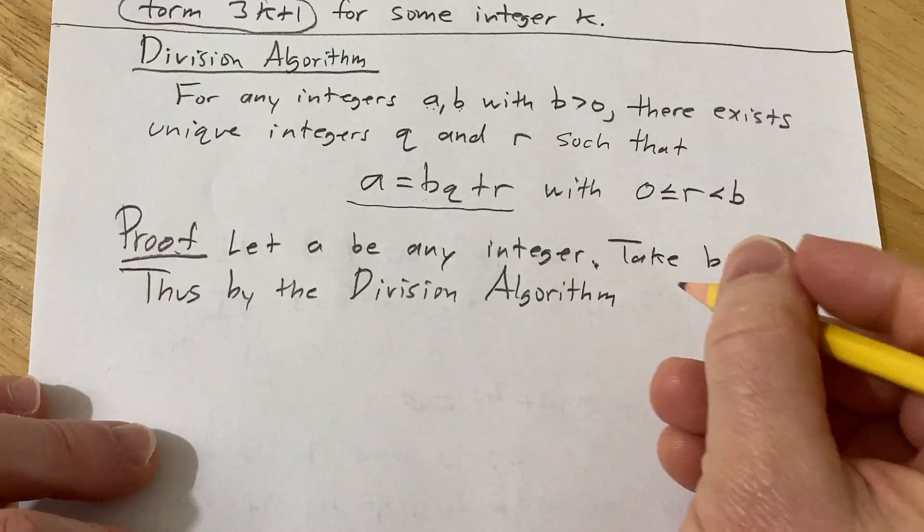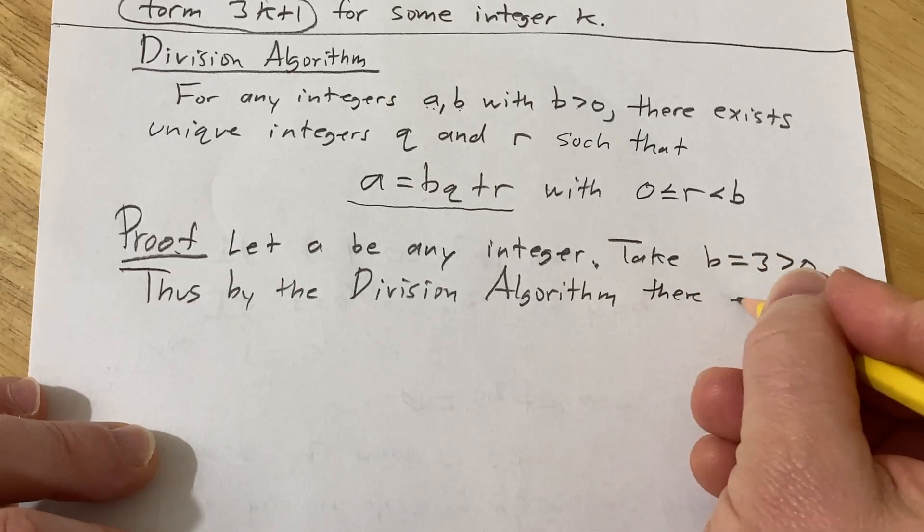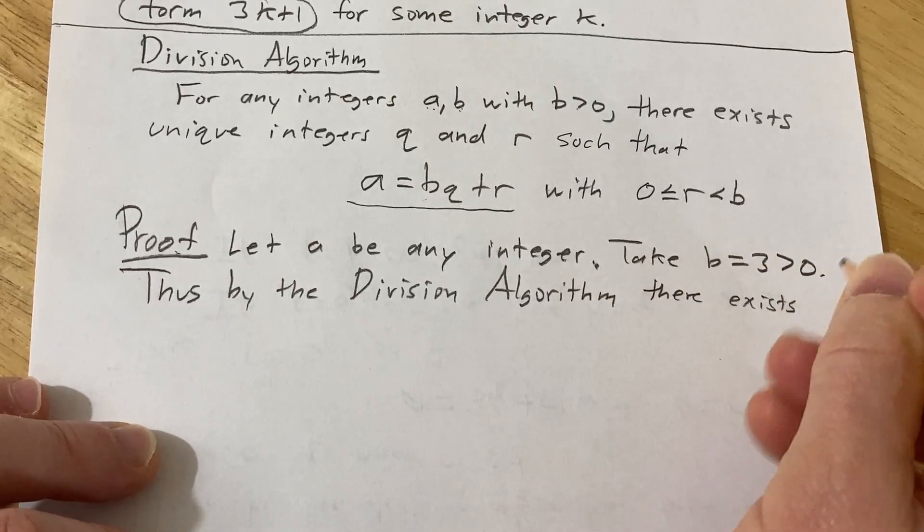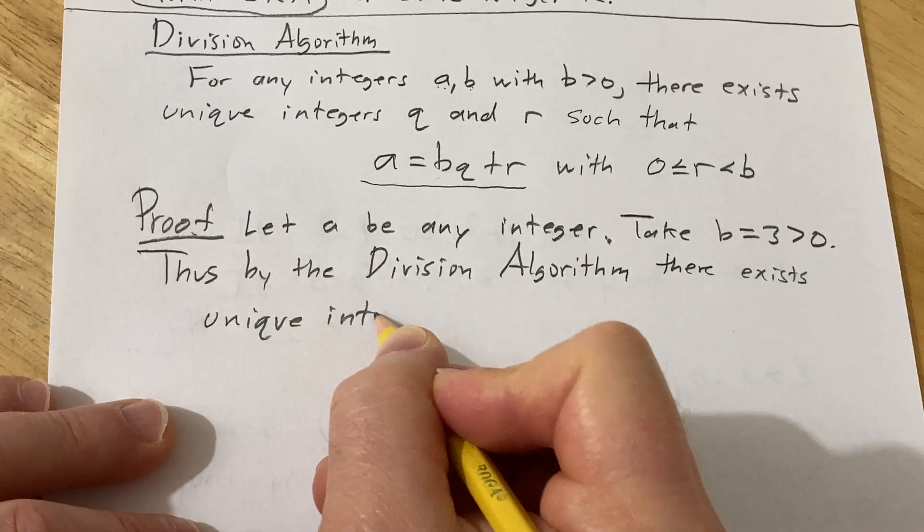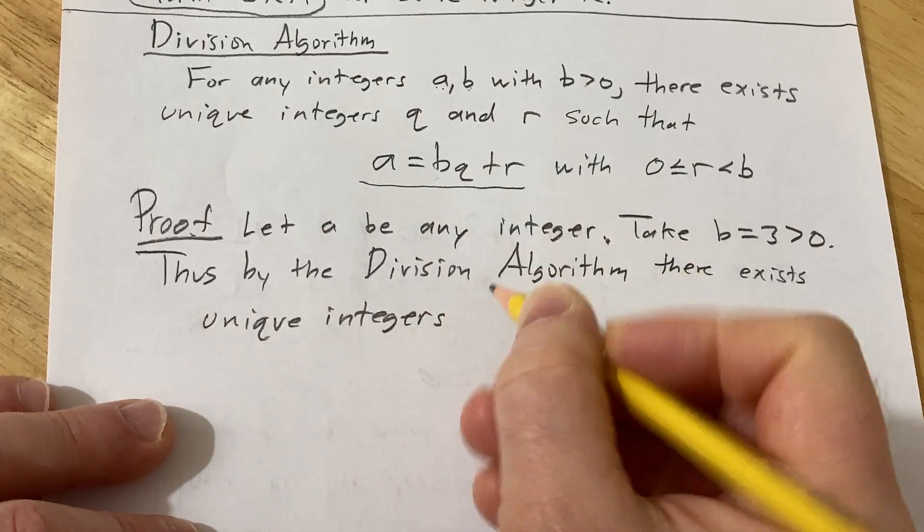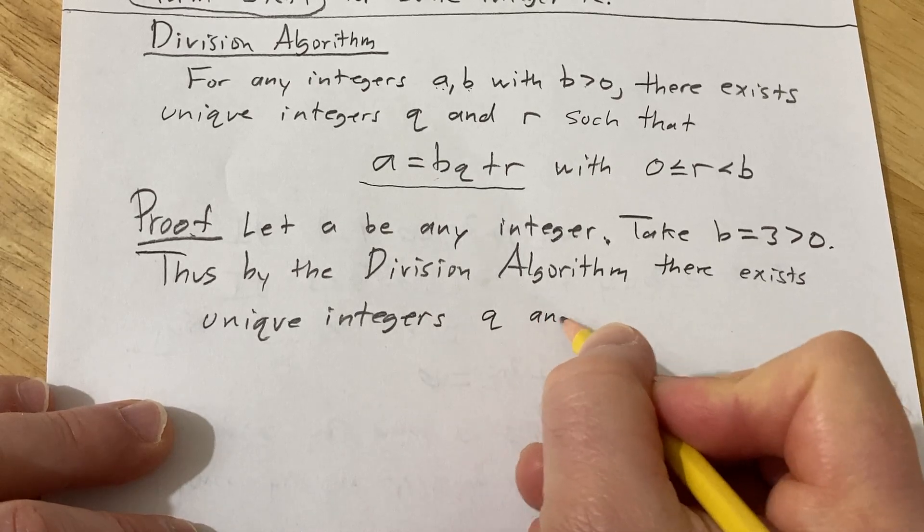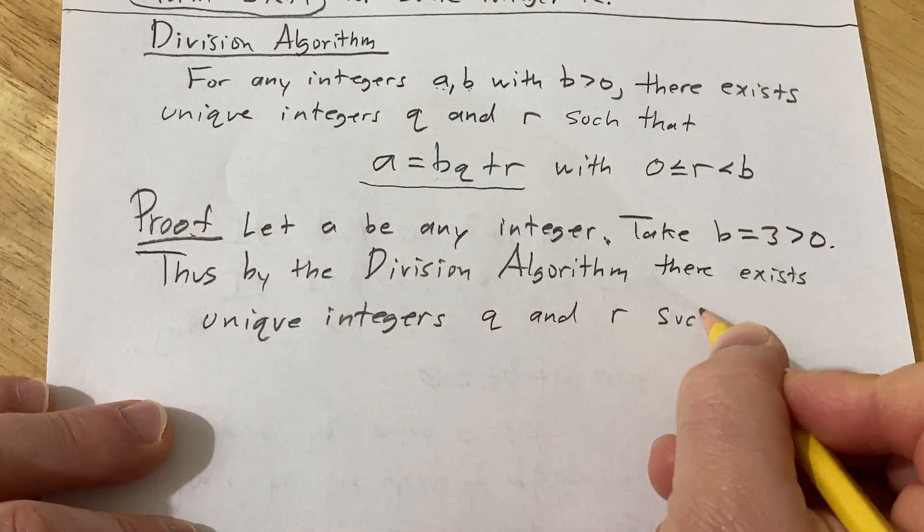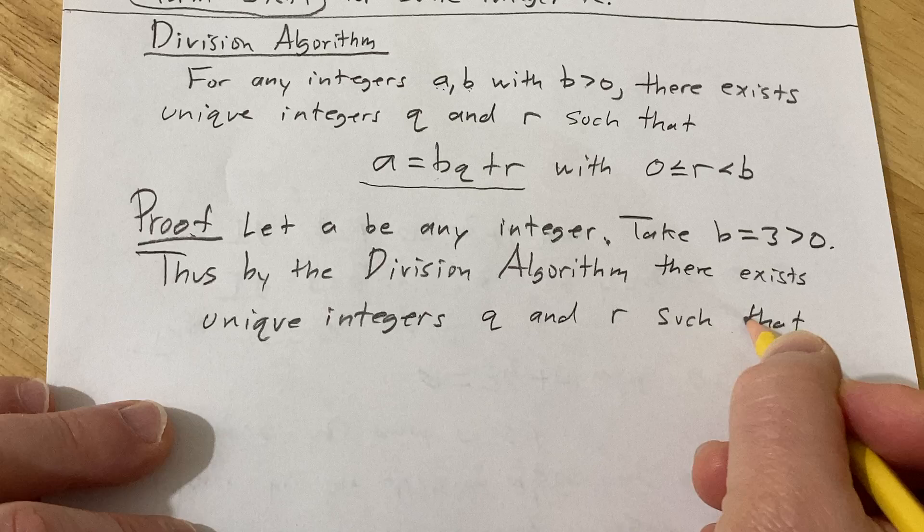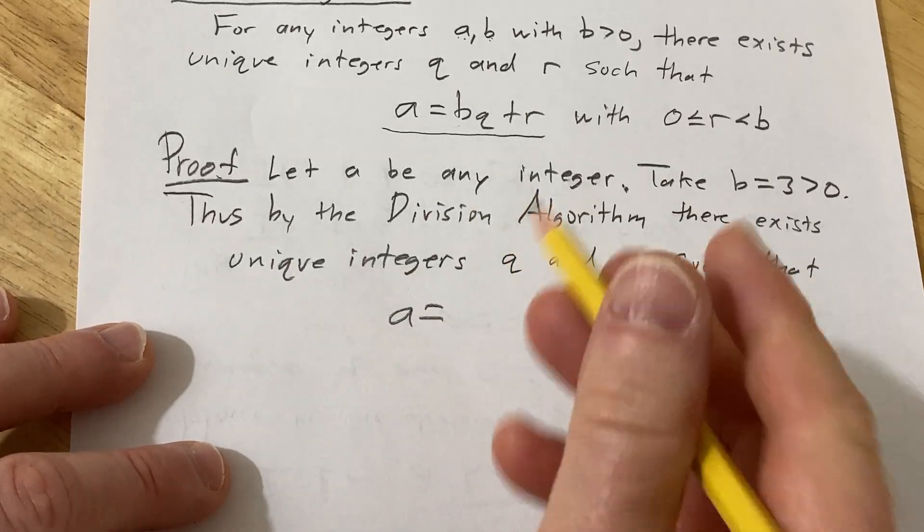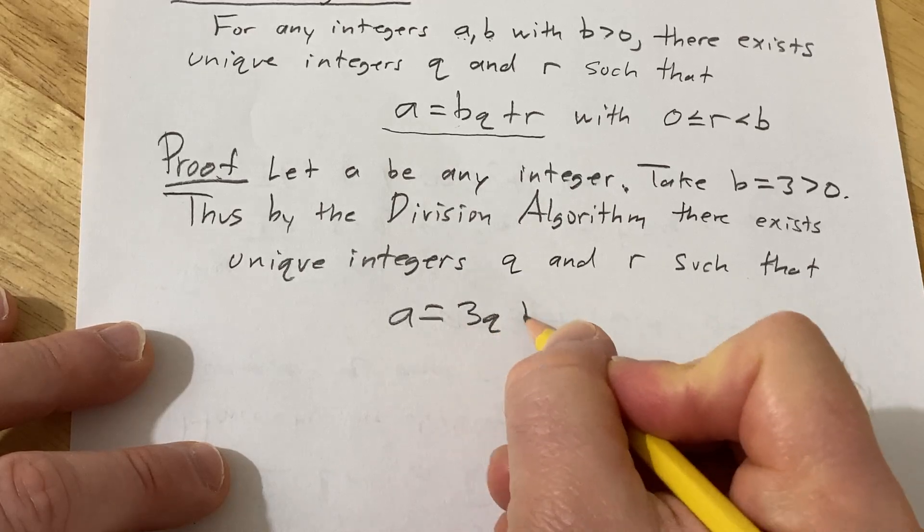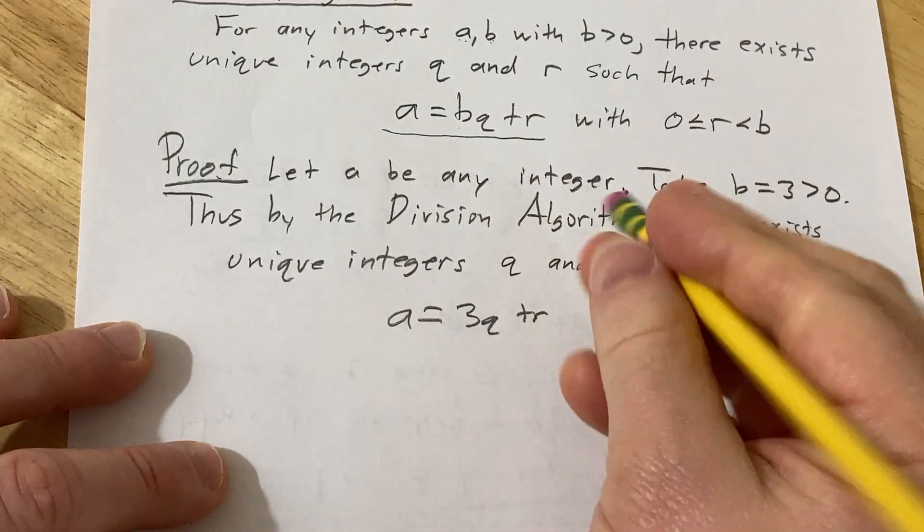there exists unique integers q and r such that a is equal to 3q plus r